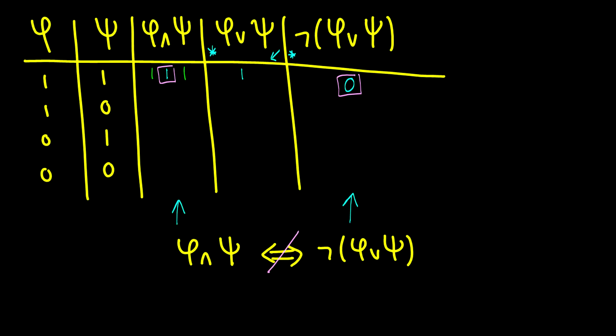And for the sake of completion here, the next three rows are going to be zeros in φ∧ψ, since we require that both be true. We know φ∨ψ is a one one zero truth table, which means it's false only when both disjuncts are false. And for the negation, we just switch the values.